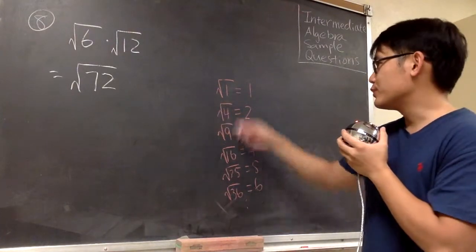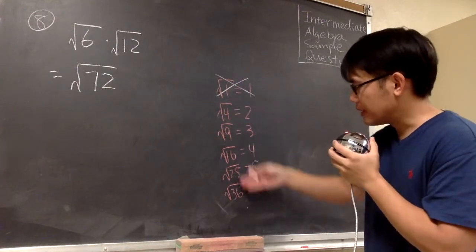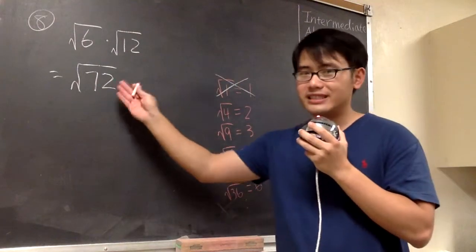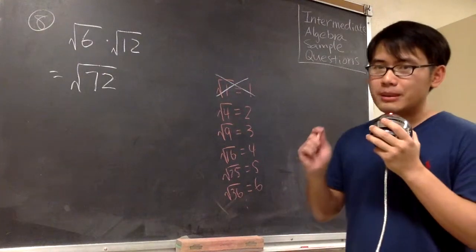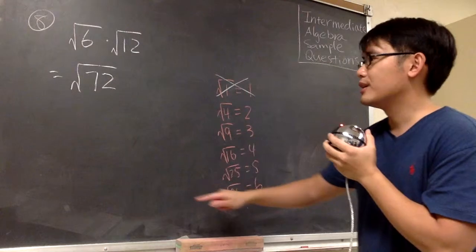We want to use the bigger number whenever possible. Even though we know 9 goes into 72 eight times, right, because 8 times 9 is 72...